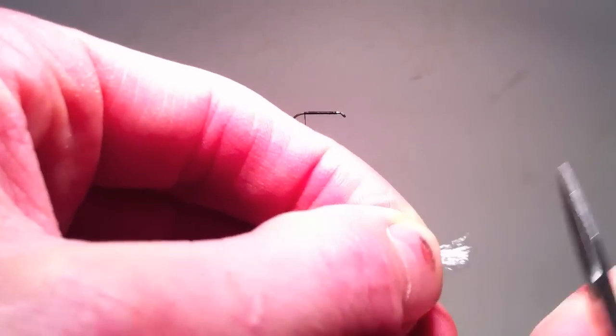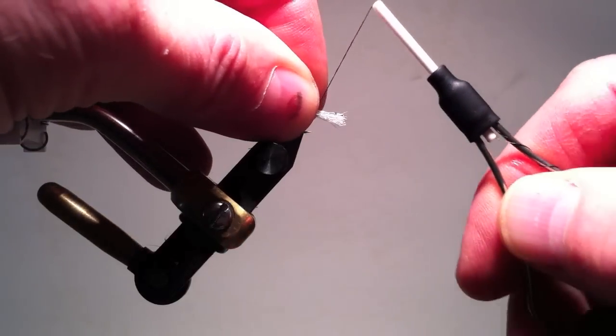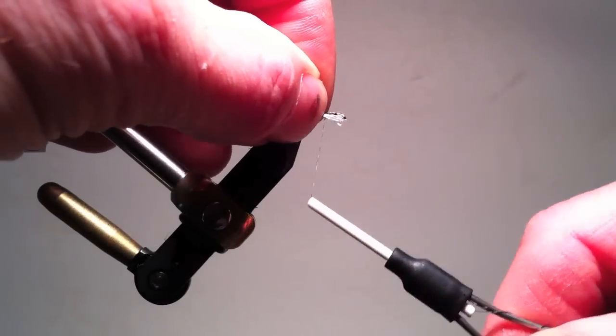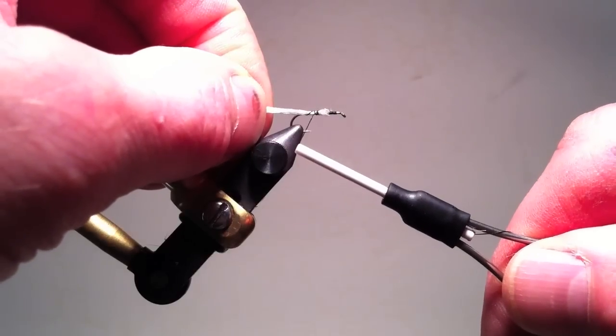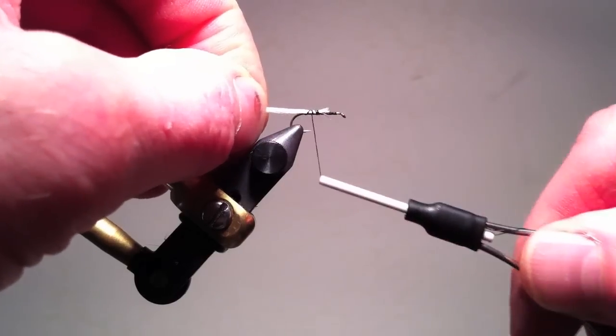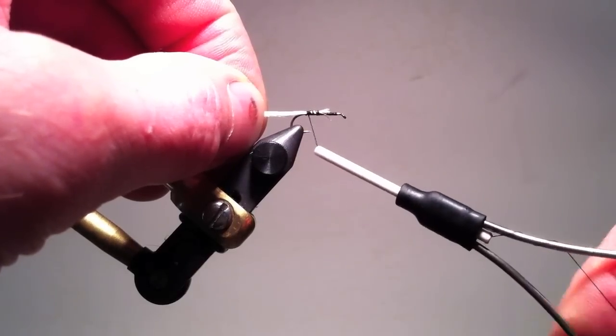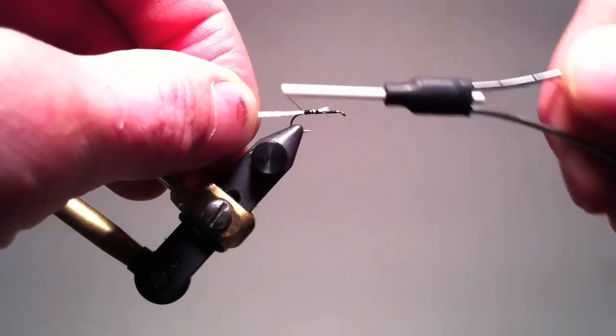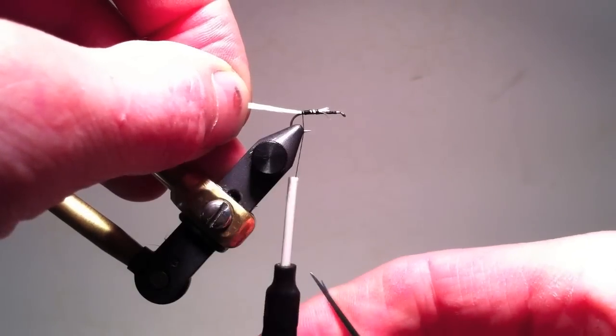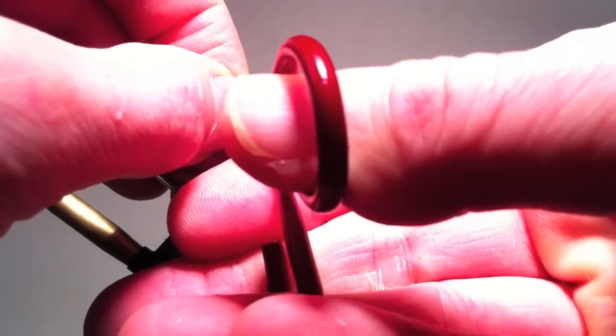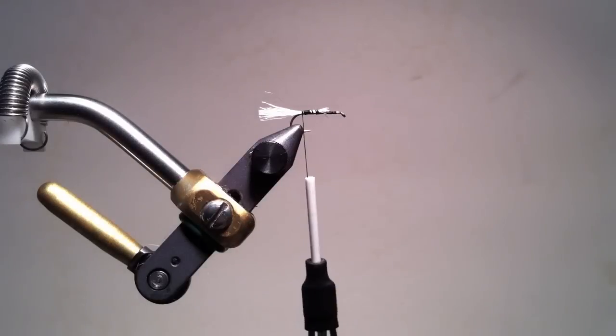The shuck is much thicker than I would normally use, but you can see it better on this video, so I'm tying in a thick shuck. I'll tie that in in the usual fashion, pulling it into position and getting my thread positioned at the bend of the hook where I want to tie in the body material. At that point, I will cut off the shuck approximately the same as the body length.